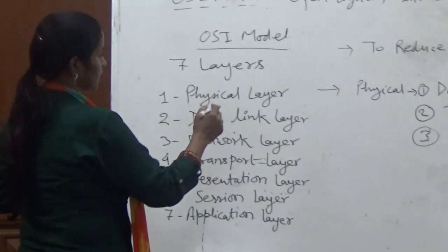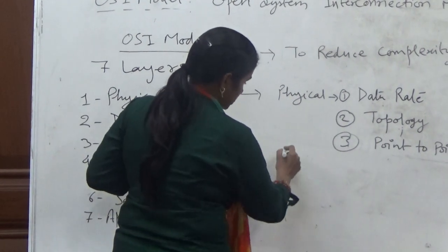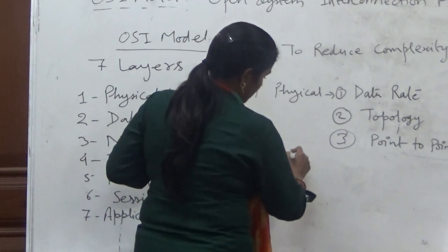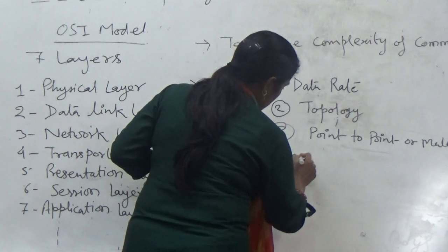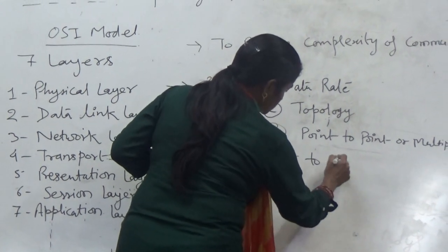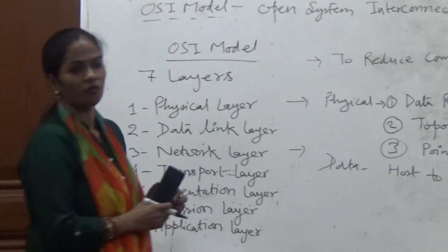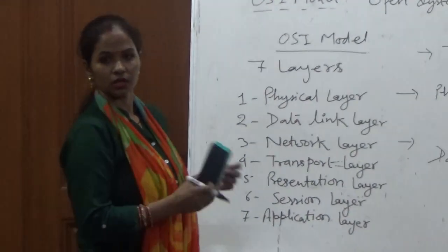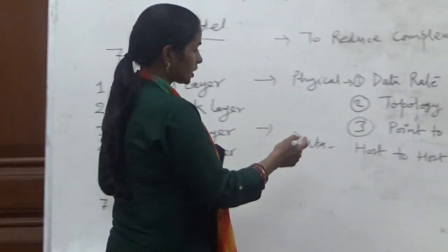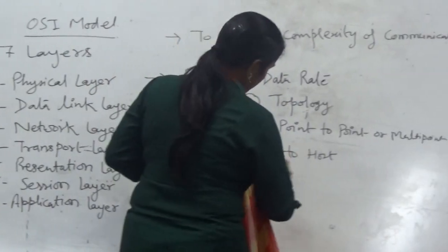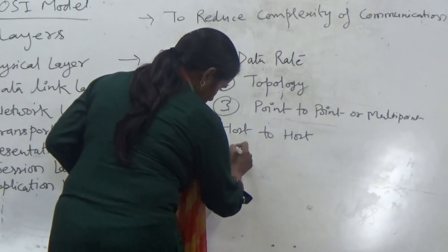The second layer is the data link layer, which provides a host-to-host link. It deals with how data is transferred from one node to another node. In the data link layer, we transfer information in the form of frames.